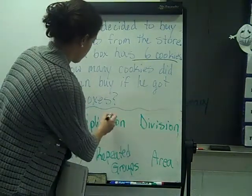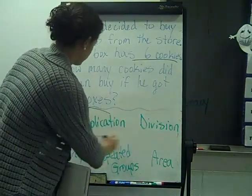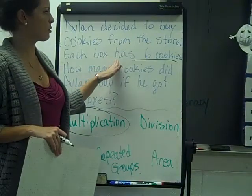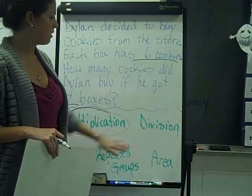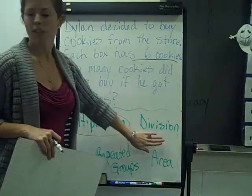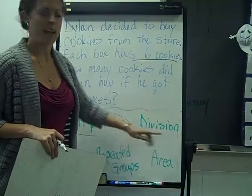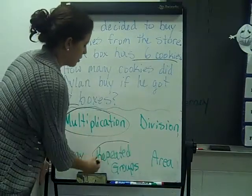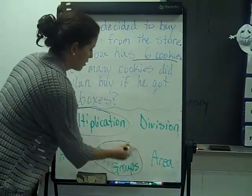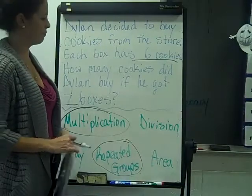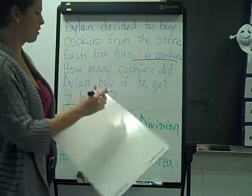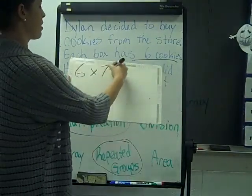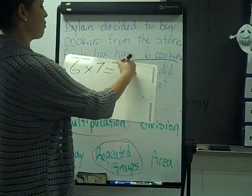So that would be multiplication. It's not talking about columns and rows, so it's not an array. It's not talking about length and width, so it's not area. It is repeated groups, since it is six sets of seven. So that problem would look like six times seven equals what?